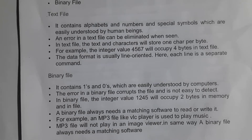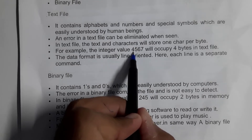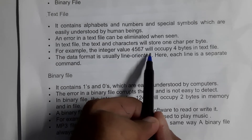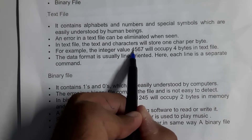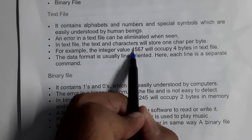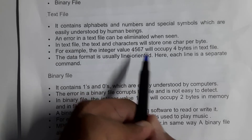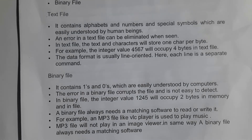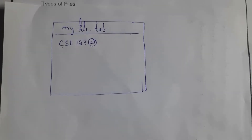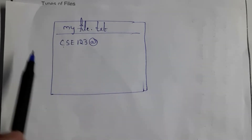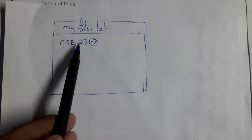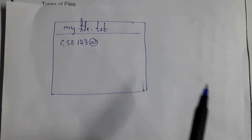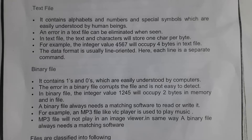In text files, all alphabets, numbers, and special symbols are treated as characters, and each character occupies one byte of memory. For example, the number 1245 has four digits — each digit is treated as a single character, so it occupies four bytes of memory. Another example: a text file named 'myfile' containing seven characters will occupy seven bytes of memory.